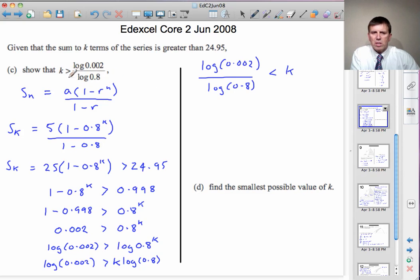But we write it in the form that they've got it here, bringing the k to the other side. Remember, k is greater than this means the same as this is less than k. So k is greater than the log of 0.002 divided by the log of 0.8.